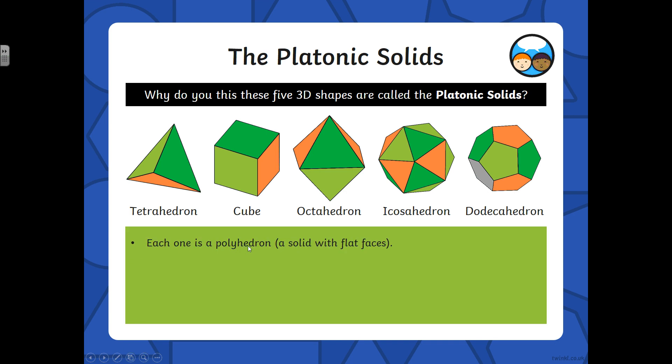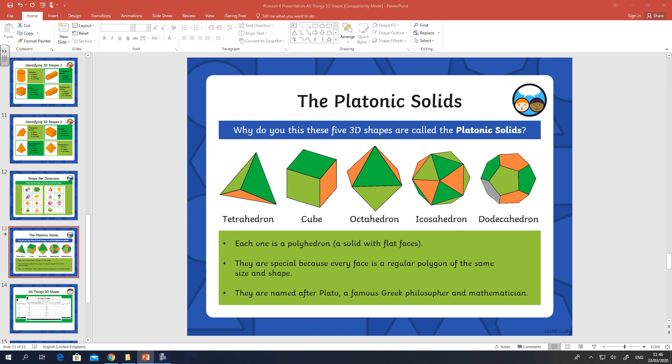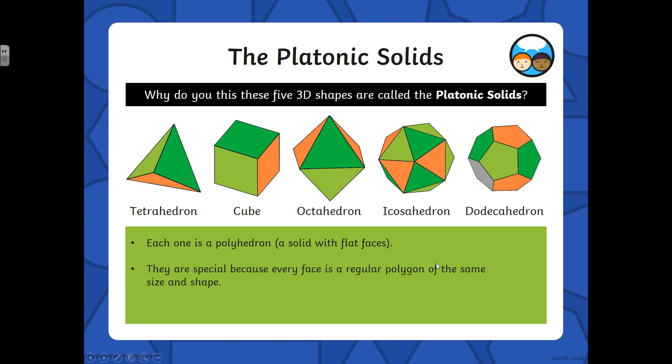Okay, each one is a polyhedron, a solid with flat faces. They are special because every face is a regular polygon of the same size and shape. So with a cube, you've got all faces that are squares. Yeah, like I said, they are all 3D shapes with the same shape face.